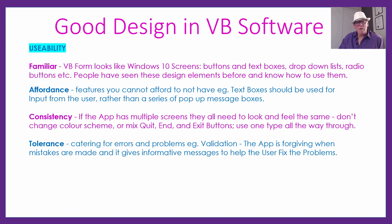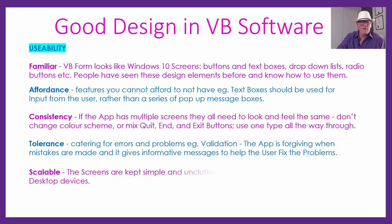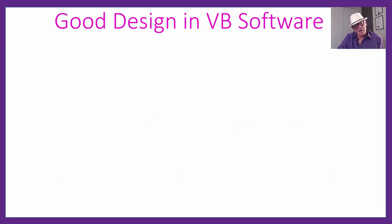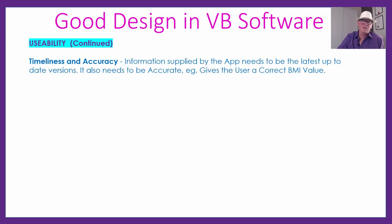Tolerance is catering for errors and problems — being nice and forgiving to people. This is really where all our validation learning comes in. The app is forgiving and gives validation messages — nice, simple, clear messages that tell users how to fix the issue. Scalable: you want a screen design that's not crammed with small writing. Keep things simple and uncluttered with big fonts so it's scalable and could be used on different screen sizes and devices.